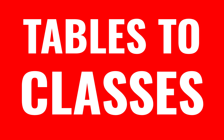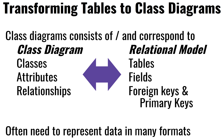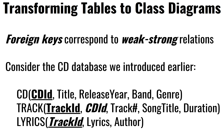We're going to look at an algorithm that we could use to convert tables to classes, or maybe classes to tables. There might be a one-to-one relationship between a class diagram and a relational model: classes become the tables, attributes become the fields, and the relationships — the lines — can be converted into foreign keys and primary keys. We often need to go backwards and forwards between these representations.